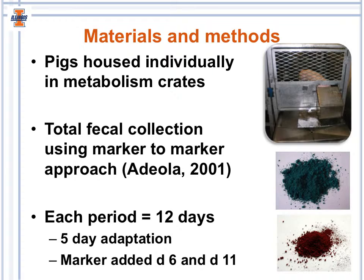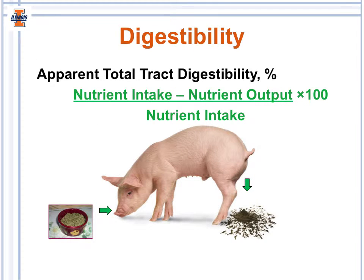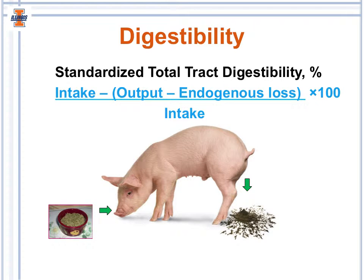On day six, an indigestible marker was added to the morning meal, and on day 11, ferric oxide was included in the morning meal to indicate the ending of collections. We used the direct procedure and the following equations: apparent total tract digestibility was calculated as nutrient intake minus nutrient output, divided by nutrient intake, multiplied by 100%. Standardized total tract digestibility was calculated as intake minus output with endogenous losses subtracted, divided by intake, multiplied by 100%.